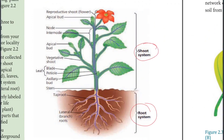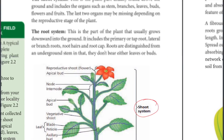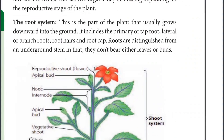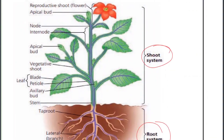The two major systems of the plant are the root system and the shoot system. The shoot system is the plant part usually found above the ground and includes organs such as the stem, branches, leaves, buds, flowers, and fruits.